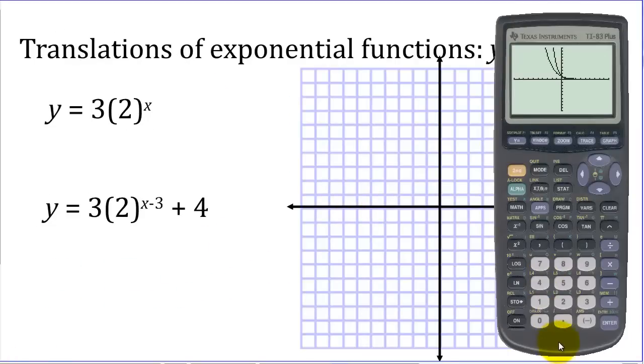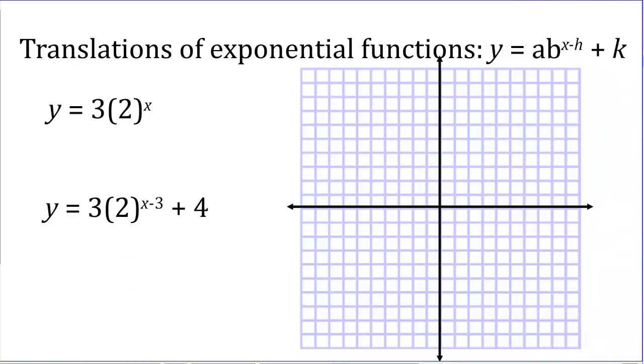Our last thing here will be to look at what I call the translations. We've been doing this with a lot of our families. So now we have, instead of x as our exponent, we have x minus h. And then we have here k.